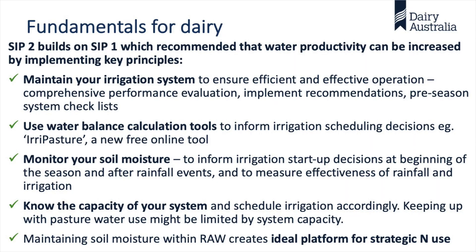This is what came out of SIP 1: fundamentals for good irrigation performance. Maintain your irrigation system to make sure it's working as it should — one of the things that doesn't happen a lot. Use water balance calculation tools such as IriPasture, which we'll be mentioning a little bit today. Monitor your soil moisture, which James will tell us some good information on.